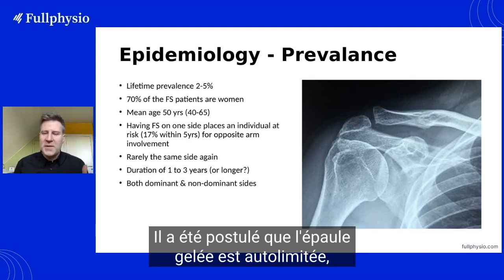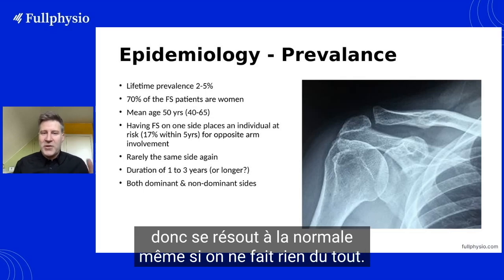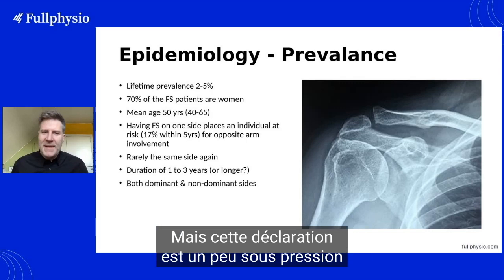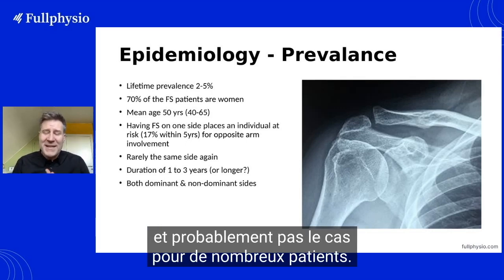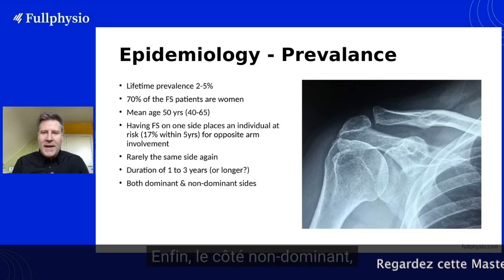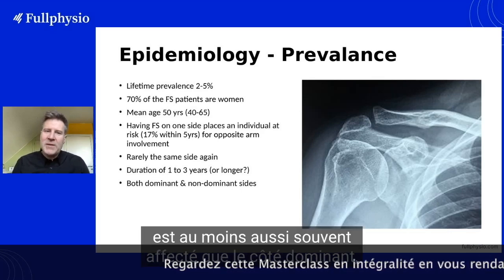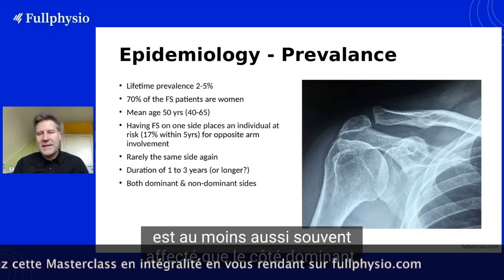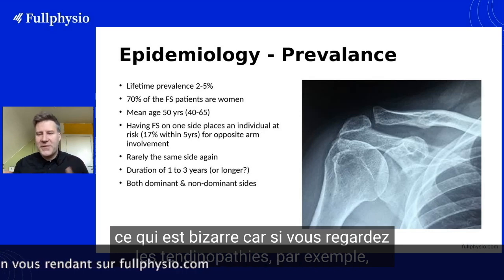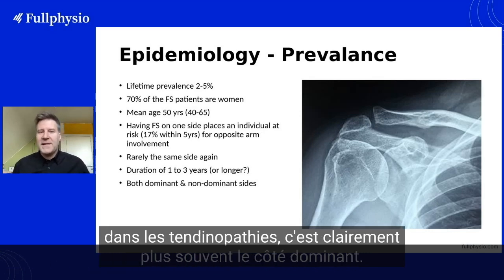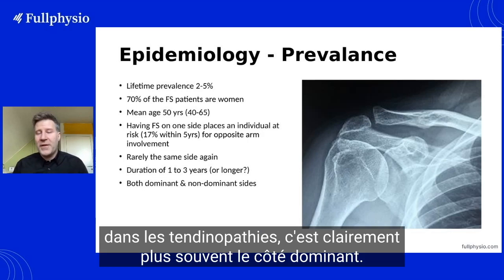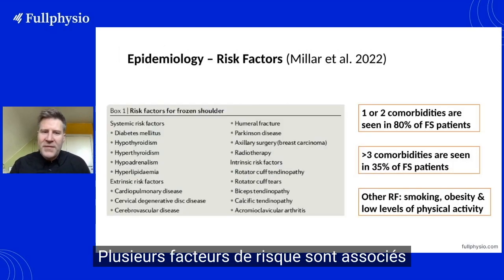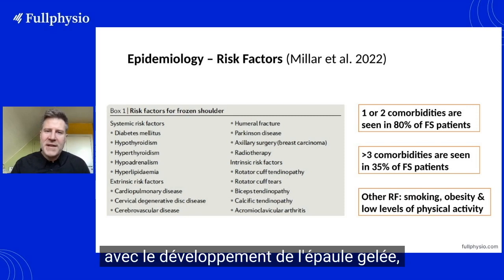It has been postulated that frozen shoulder is self-limiting — resolving to normal even if you do nothing at all — but this statement is under pressure and is probably not the case for many patients. Finally, the non-dominant side is at least as often affected as the dominant side, which is quite unusual because, for instance, in tendinopathies it is clearly more often the dominant side.